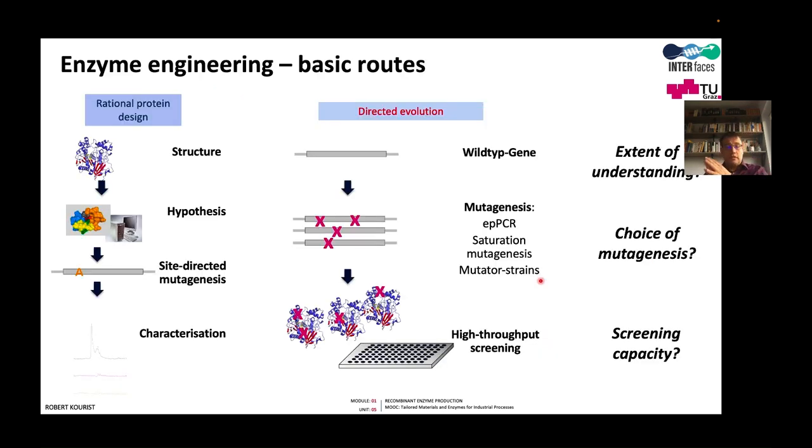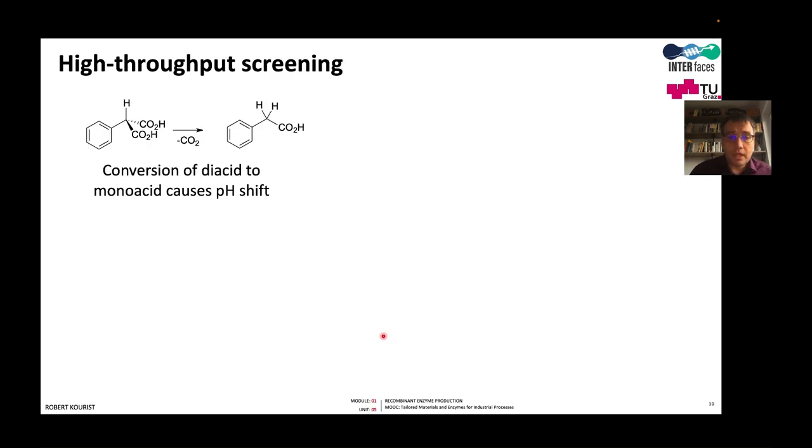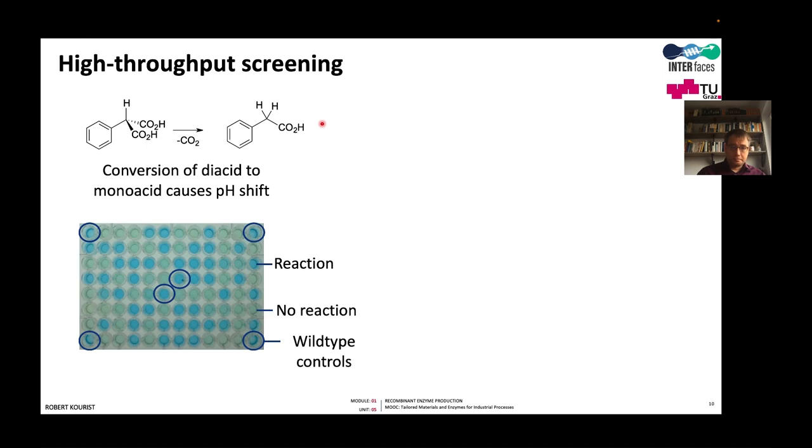The last component for a directed evolution experiment is the high throughput screen. Here we need a simple way to measure a reaction in a microplate. The activity of the enzyme can be determined by quantification of substrate and product, for instance in HPLC. But this would mean for each mutant we need at least one HPLC measurement. In this case, if we decarboxylate a malinate and produce a monoacid, we have a pH shift. Because here we have two carboxylic groups, here only one, so the medium gets more basic. We can use a buffer with a low buffer capacity. You see this here.